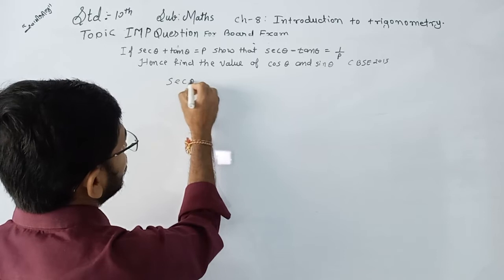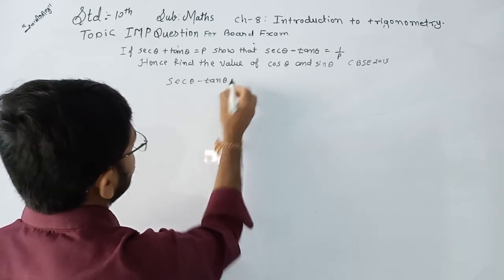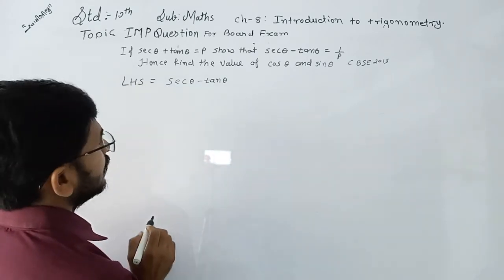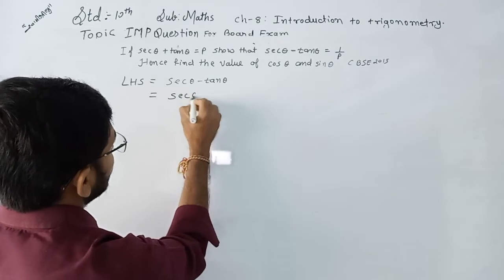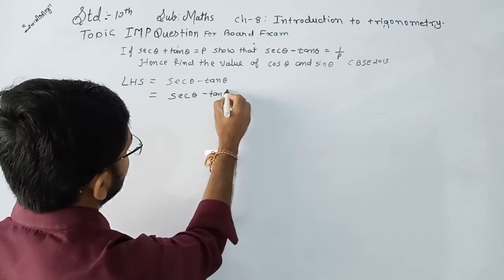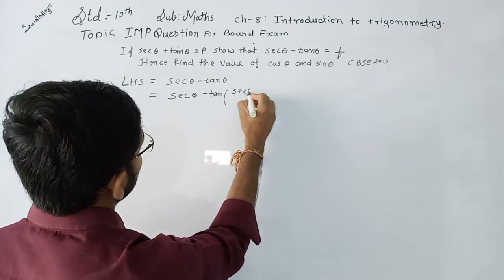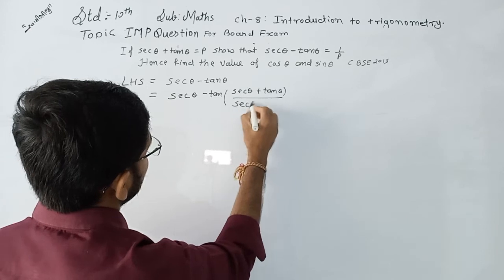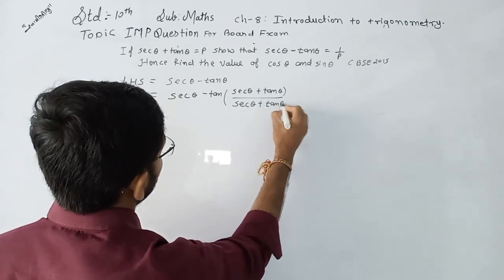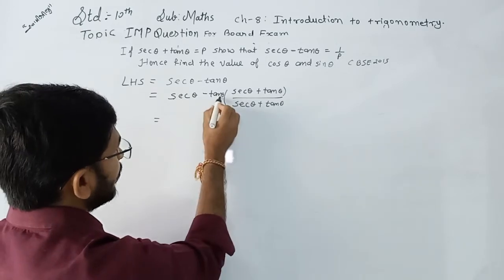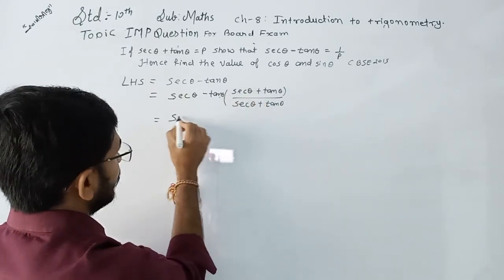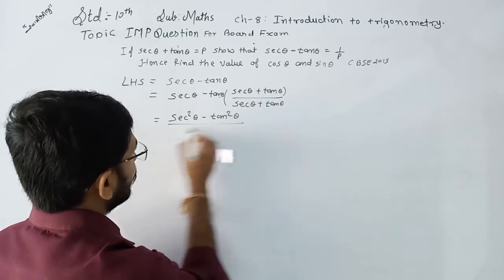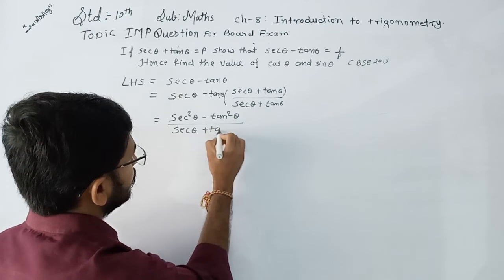We write the left-hand side equal to sec θ - tan θ. We are doing multiplication: (sec θ - tan θ) multiplied by (sec θ + tan θ) upon (sec θ + tan θ). It becomes sec²θ - tan²θ upon (sec θ + tan θ).